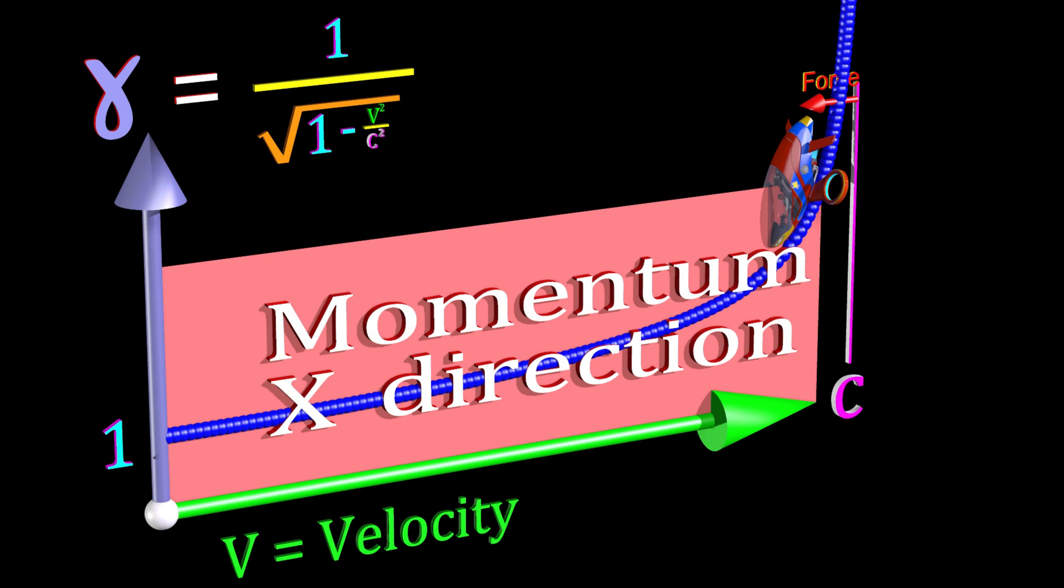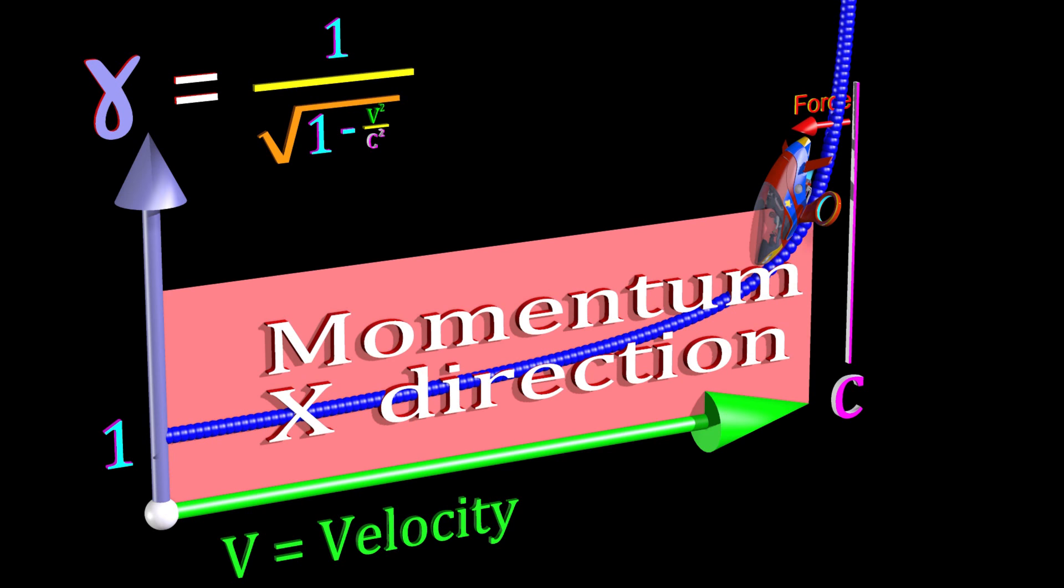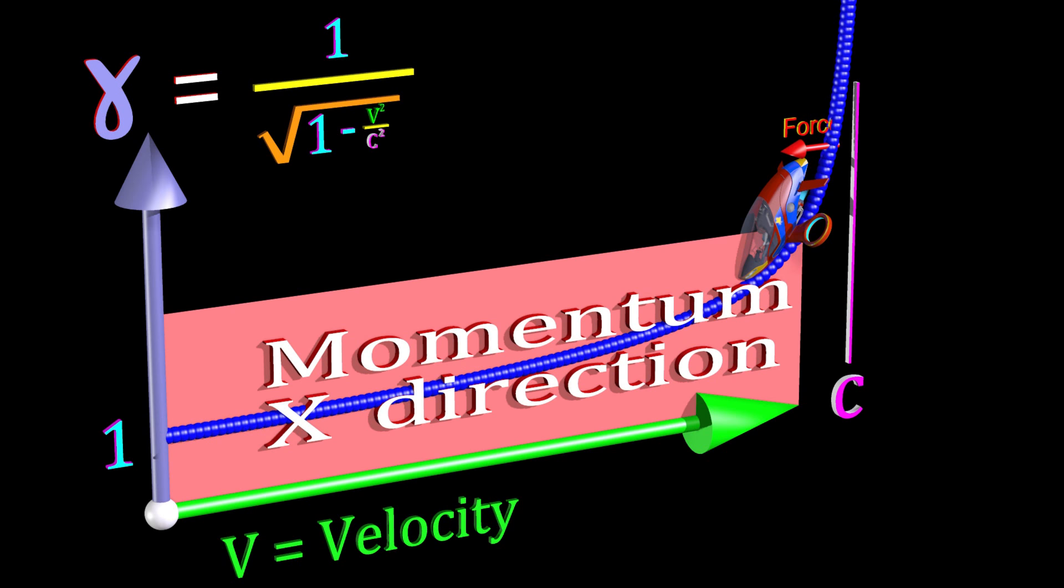With the force now again parallel to the velocity, gamma is significantly changing, and the velocity therefore changes more slowly.